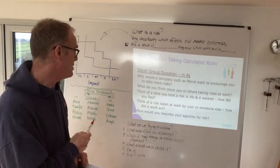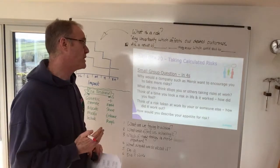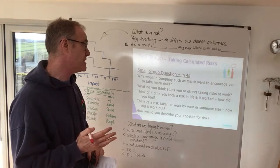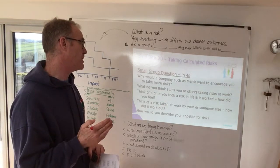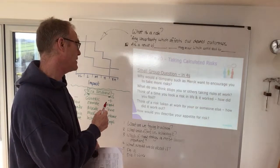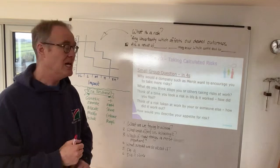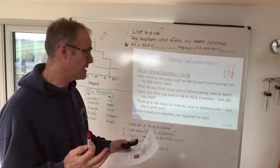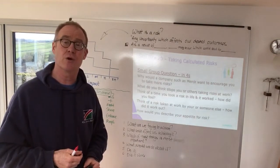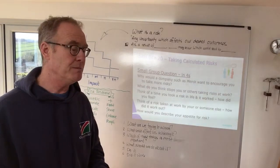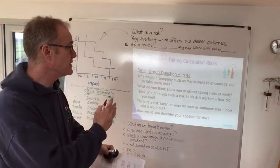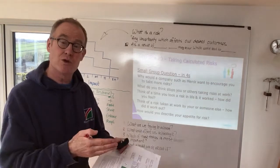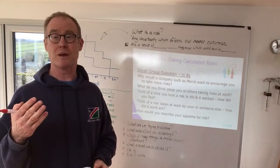Once they've done that, dive into your question for exploration. I'd suggest small groups of four because this is quite an intense conversation. We have four or five questions: Why would a company such as Merck want to encourage you to take more risks? What stops you or others taking risks? Think of a time you took a risk in life and it worked. Think of a risk taken at work — how did it work out? And how would you describe your appetite for risk? There's a lot there; it's fine if they don't get through all the questions. Then run a plenary — about 15 minutes, though that's a lot to cover.